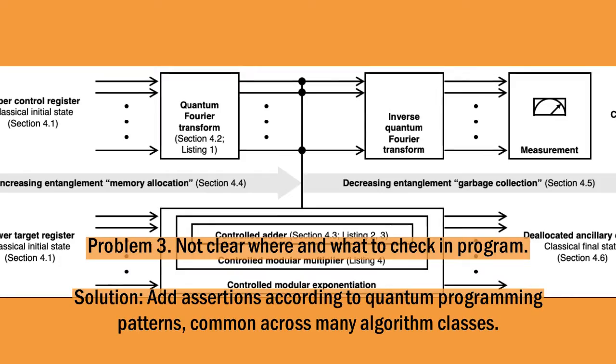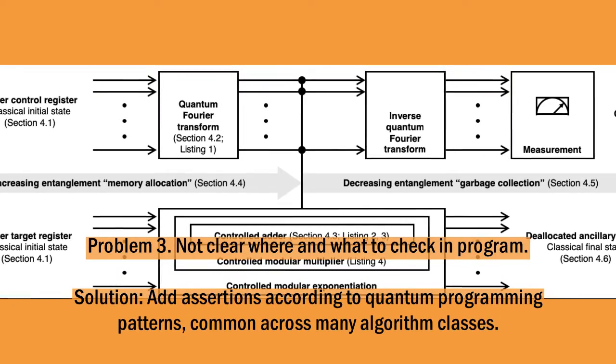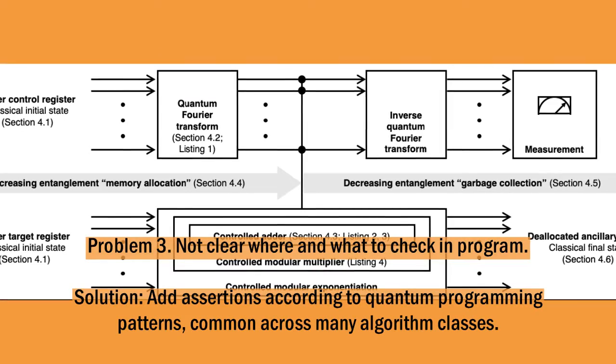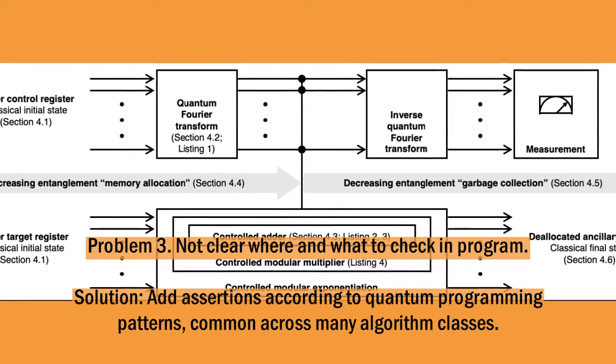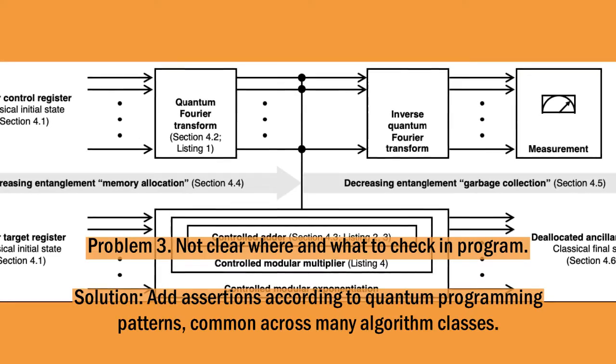Finally, the third problem is that it's not clear where and what we should check inside quantum programs. Our solution is to apply assertions according to quantum programming patterns that we identify, which are common to many algorithm classes.